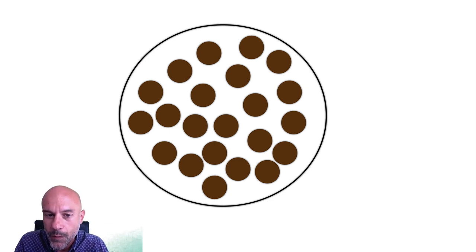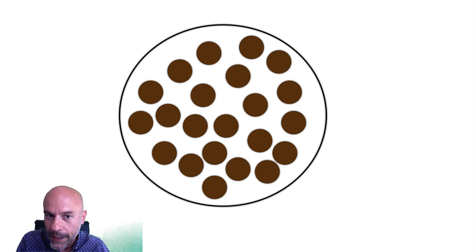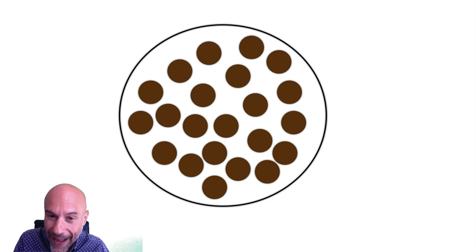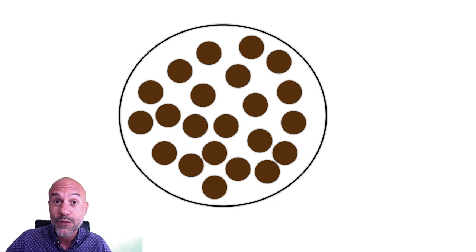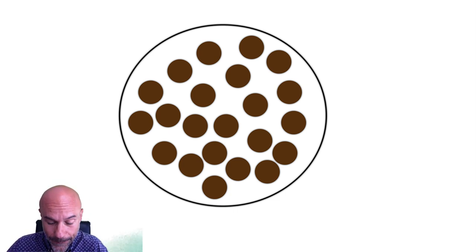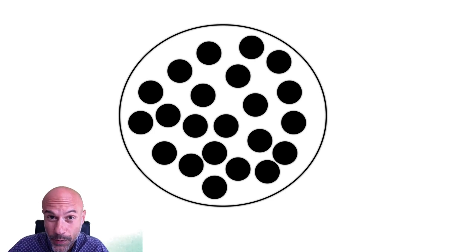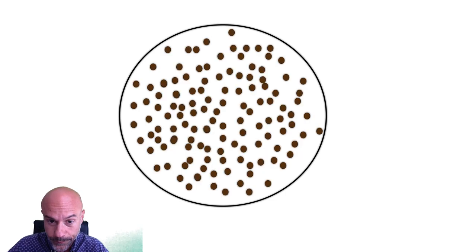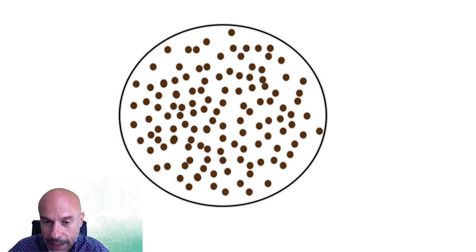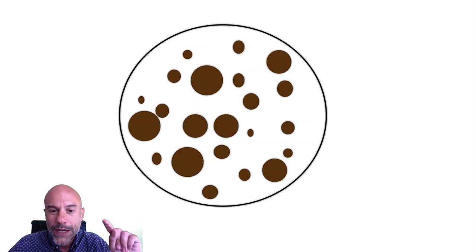Here you can see multiple brown globules — are they typical or atypical? They are regular because they have the same color brown, more or less the same diameter, and are regularly distributed in the lesion. Or the next example: black globules, regular — yes, for the same reasons. Next example: brown dots — regular, because they are the same size, same color, and regularly distributed.